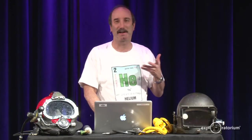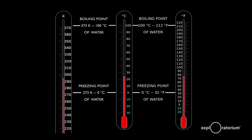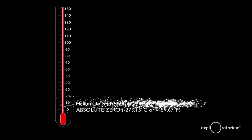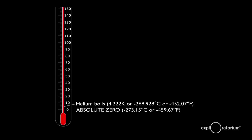Helium is exceptional in that at atmospheric pressure it is never a solid — it has no freezing point. It does have a boiling point, however, and it boils at a very low temperature. On the Kelvin scale — the absolute temperature scale where zero means zero — water boils at 373 Kelvin. Helium boils about four degrees above absolute zero. It never solidifies; you can't have solid helium. It's the only element that never freezes.